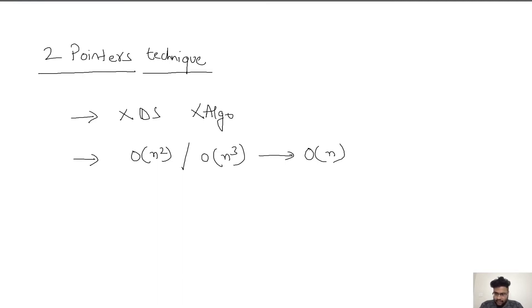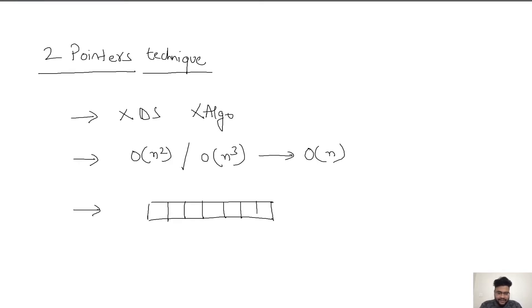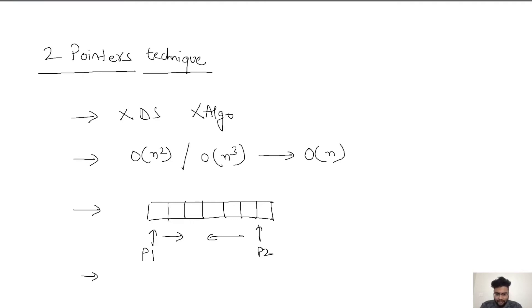Two pointers generally involves two or more pointers. If we have an array with some elements, the two pointer technique involves two different pointers — they could be virtual pointers — pointing towards some index or some value in the array. We then play around with both of these pointers, moving them in different directions to solve the problem. It generally works on linear data structures only, so make sure you are applying it on a linear data structure before using this technique.